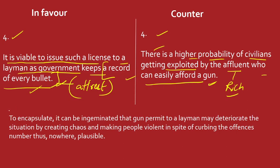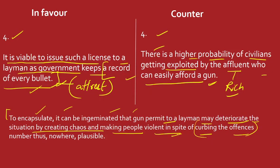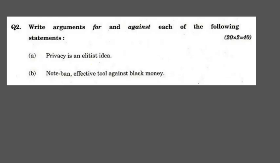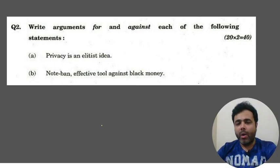Conclusion में — Overall, it can be germinated that gun permit to a layman would deteriorate the situation by creating chaos and making people violent, in spite of curbing offenses। Offenses बढ़ेंगे, chaos फैलेगा, न कहीं शांति होगी न satisfaction। इस तरह मैंने चार-चार points दोनों तरफ use करके अपनी बात justify करने की कोशिश की।